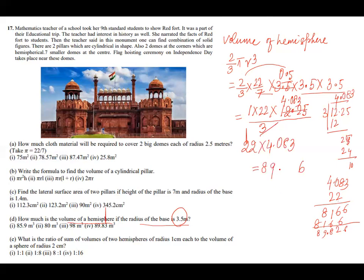89.826 meter cube. Where is the answer? Answer is 89.83. So this is close to it. So you will mark this is the answer. Fourth is the answer of this. We are getting 0.826. So if we will round off, it will be 89.83. So fourth part is the answer.